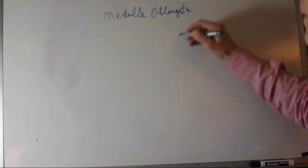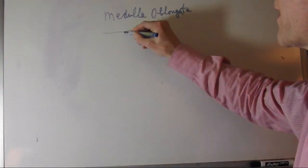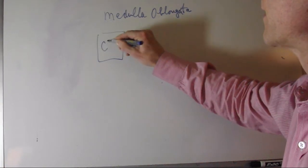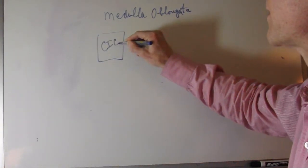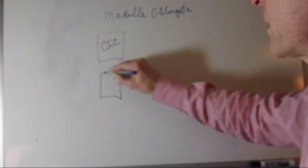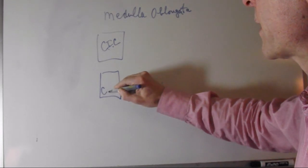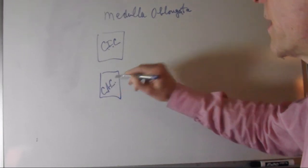So in the medulla oblongata, we have the cardiac inhibitory center and the cardiac acceleratory center.